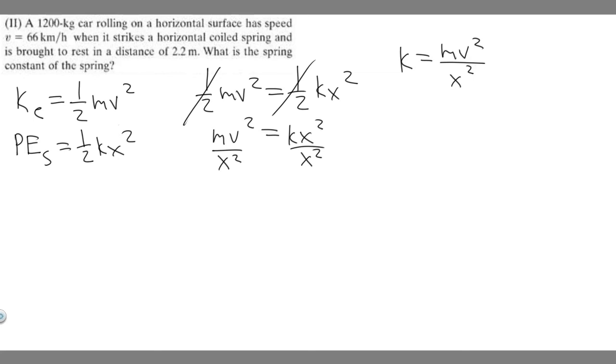There are a few things you have to do before we plug in the numbers. Notice how velocity is in kilometers per hour, but we're using kilograms and meters, so we need to change this to meters per second. We have 66 kilometers per hour. Multiply this by 1,000 meters, because there's 1,000 meters for every kilometer. That gets rid of the kilometers. Then we know for every hour, there's 3,600 seconds.